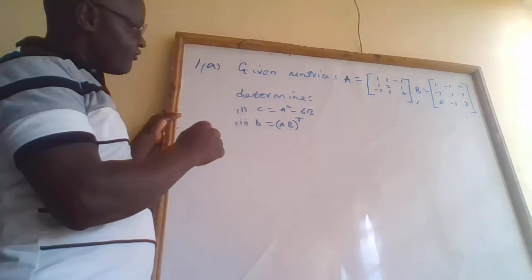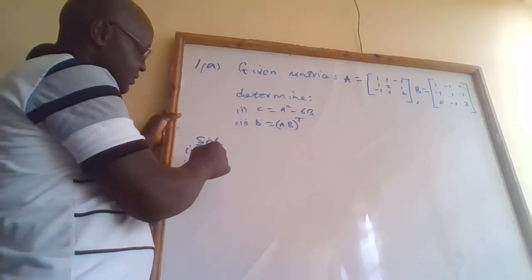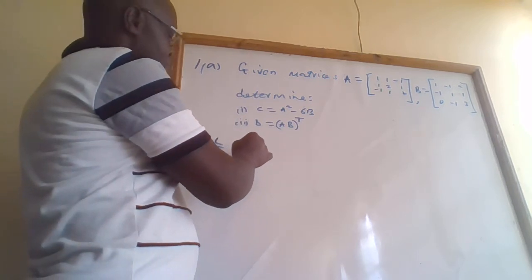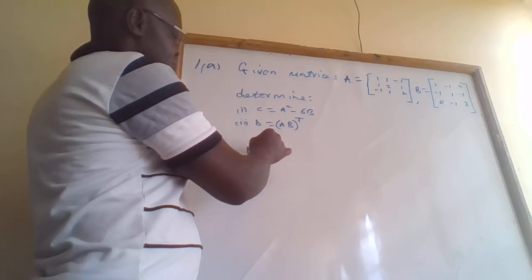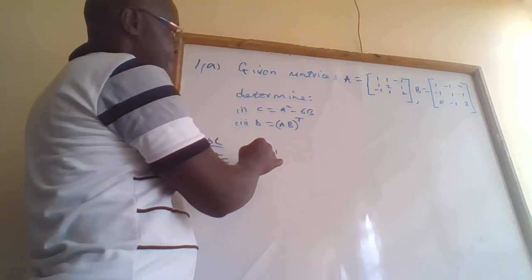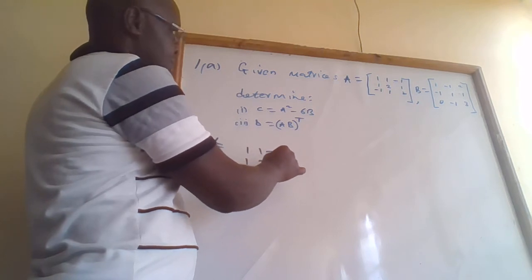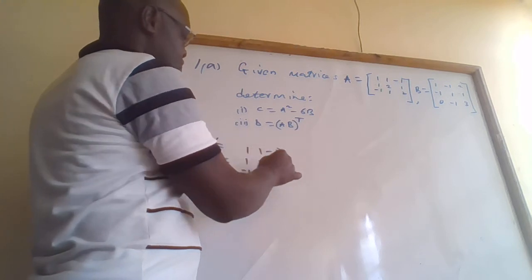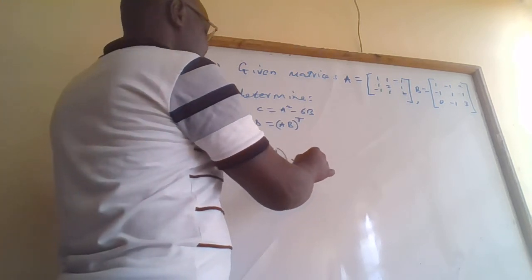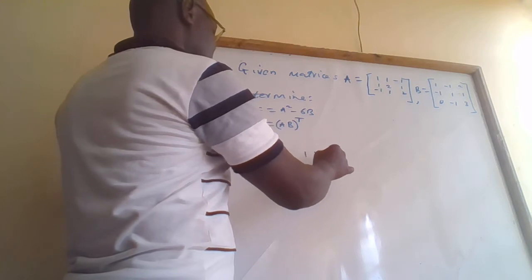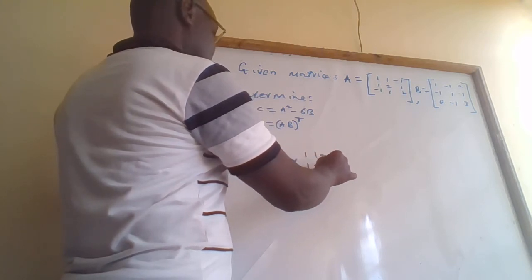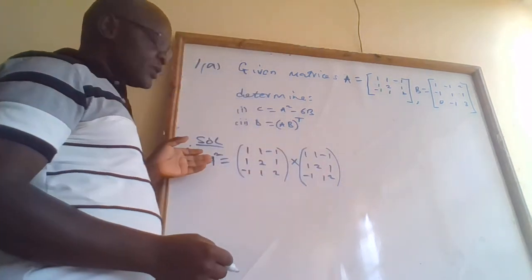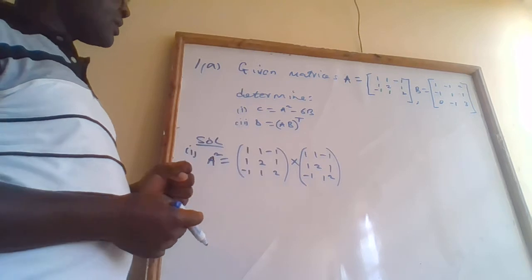First, we get A squared, which is equal to A times A. We multiply matrix A by itself: the matrix has elements one, two, one in the first row, one, one, two in the second row, and so on. So A squared — we multiply A by itself.